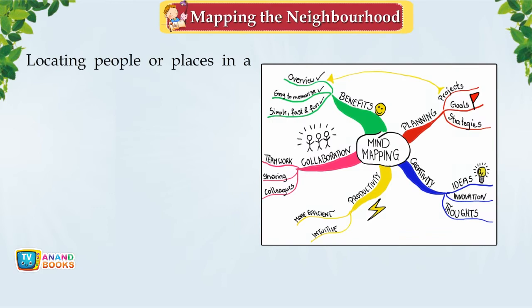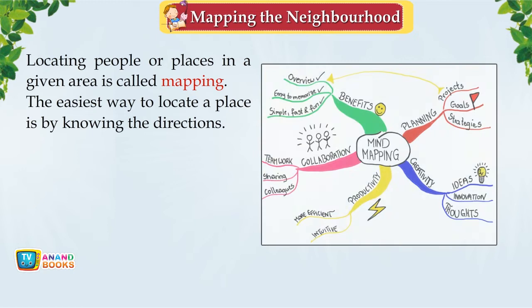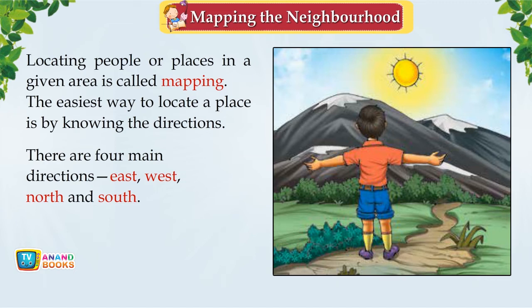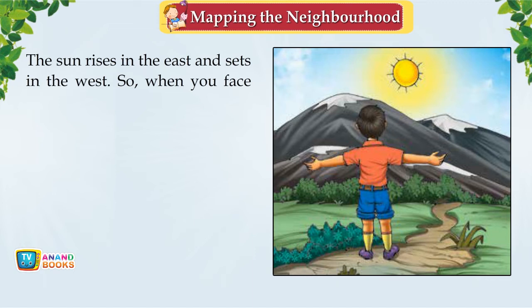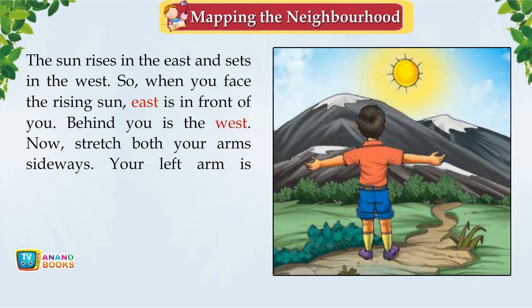Chapter 5: Mapping the Neighbourhood. Locating people or places in a given area is called mapping. The easiest way to locate a place is by knowing the directions. There are four main directions: east, west, north and south. The sun rises in the east and sets in the west. When you face the rising sun, east is in front of you and west is behind you. Stretch both arms sideways — your left arm points north and your right arm points south.